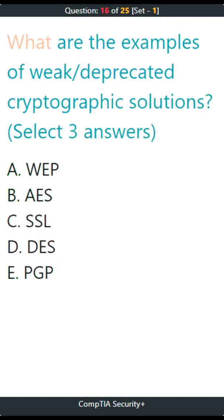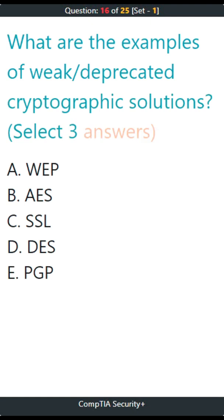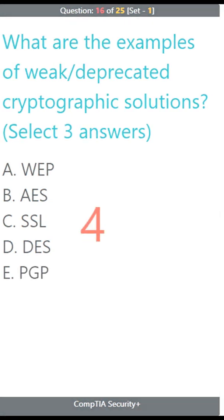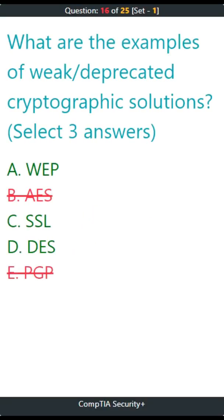Question 16. What are the examples of weak or deprecated cryptographic solutions? Select three answers. A. WEP, B. AES, C. SSL, D. DES, E. PGP. The correct answers are A. WEP, C. SSL, D. DES.